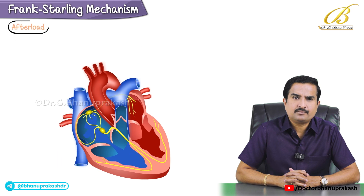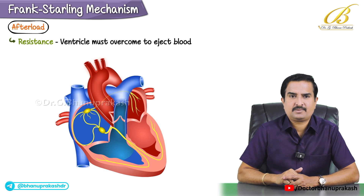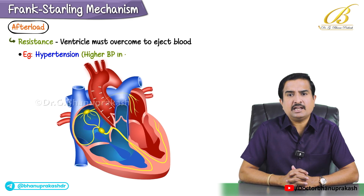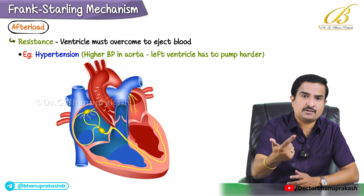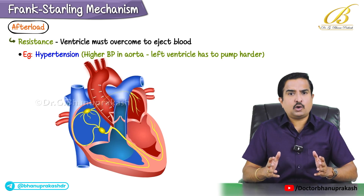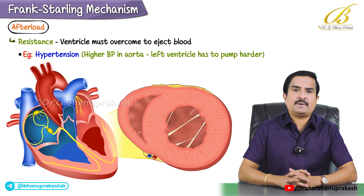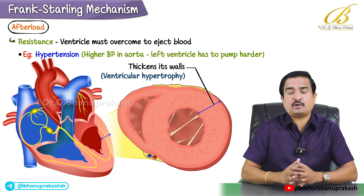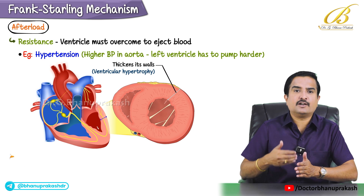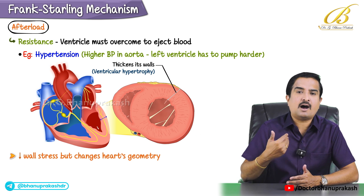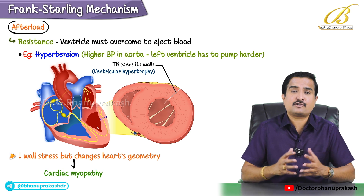Afterload is the resistance the ventricle must overcome to eject blood. In hypertension, higher blood pressure in the aorta means the left ventricle has to pump harder to overcome that resistance. When afterload is chronically high — as in chronic hypertension — the heart compensates by thickening its walls, which is ventricular hypertrophy. A thicker wall helps reduce wall stress, but changes in the heart's geometry can eventually affect cardiac function and, if excessive, lead to cardiomyopathy.